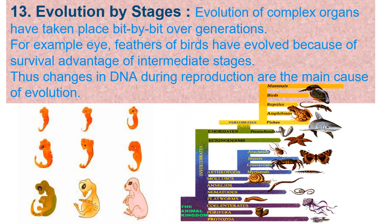Evolution by stages: Evolution of complex organs has taken place bit by bit over generations. For example, feathers of birds have evolved because of the survival advantage of intermediate stages. Thus, changes in DNA during reproduction are the main cause of evolution.